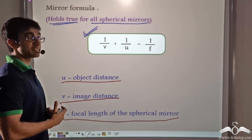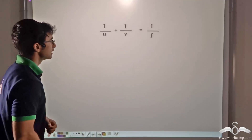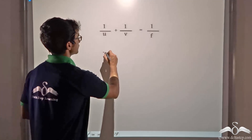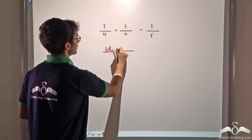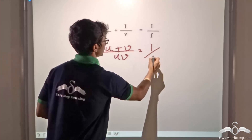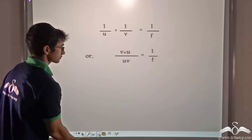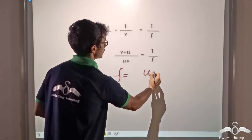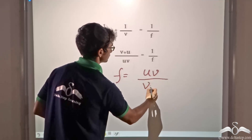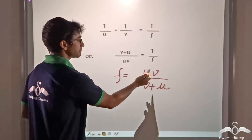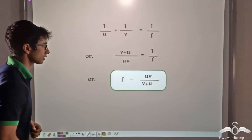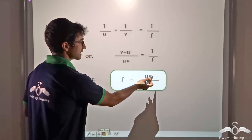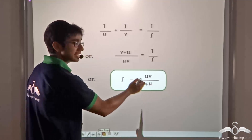So how can we simplify this expression to obtain the focal length? If we take the LCM of the left-hand side of the mirror formula and further simplify, we find that the focal length of the mirror comes out to be U times V divided by V plus U. That is, the focal length is given by object distance times image distance divided by the sum of object and image distance.